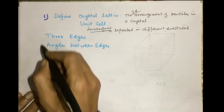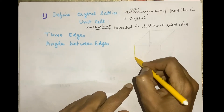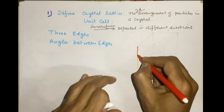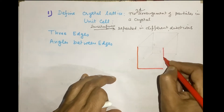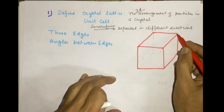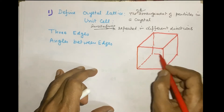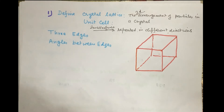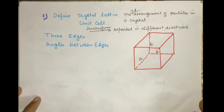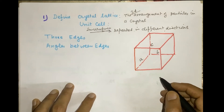In a crystal unit cell, we have three edges. This is an example of a simple cubic form — the simplest sketch of a unit cell. In this unit cell, we have three edges: one is represented by A, another is B, and the third is C. These are the three edges of a unit cell. And there are three angles between these three edges — between A, B, and C.